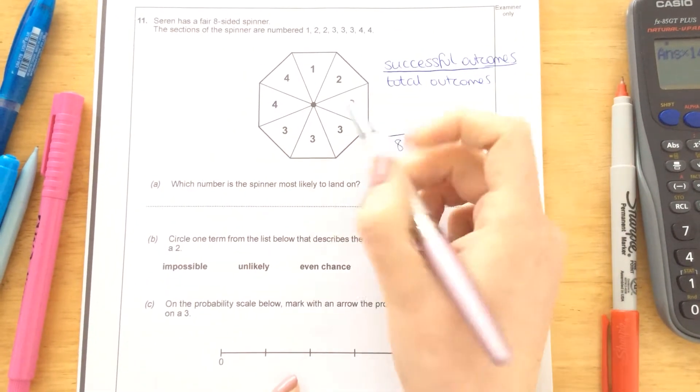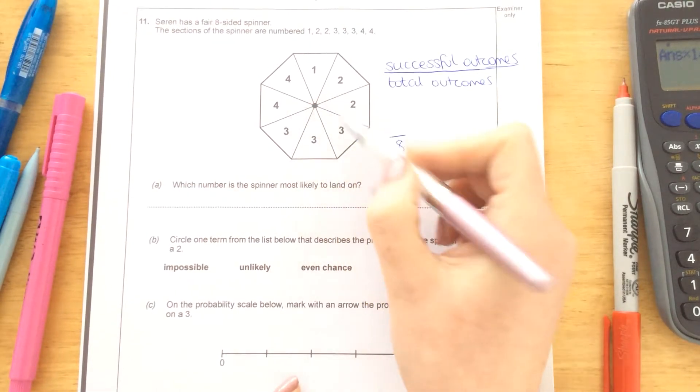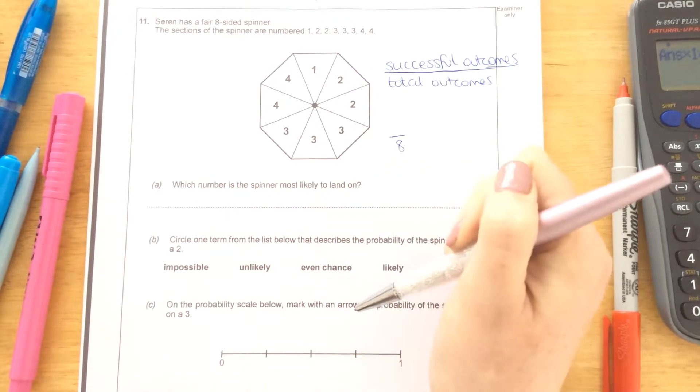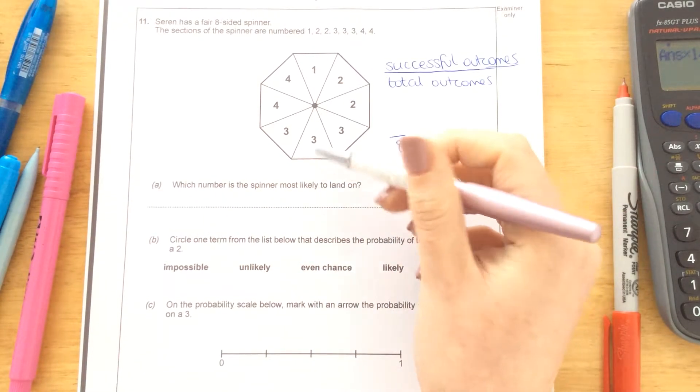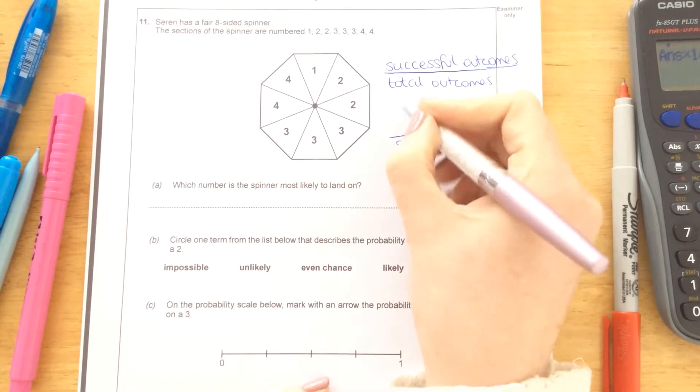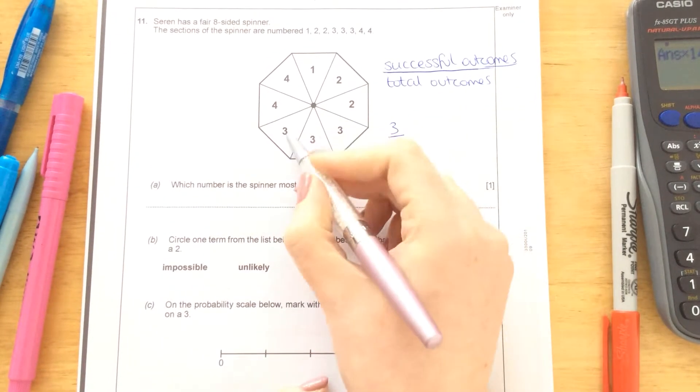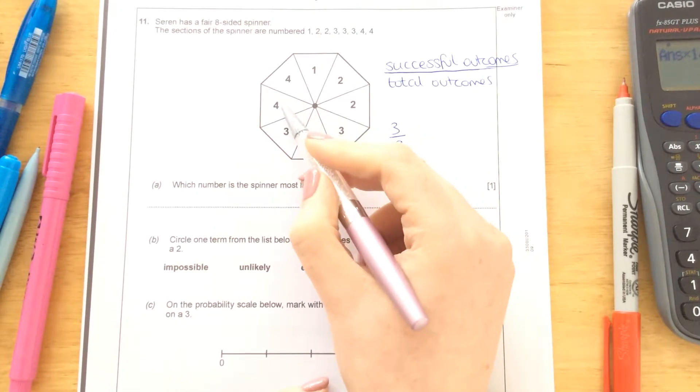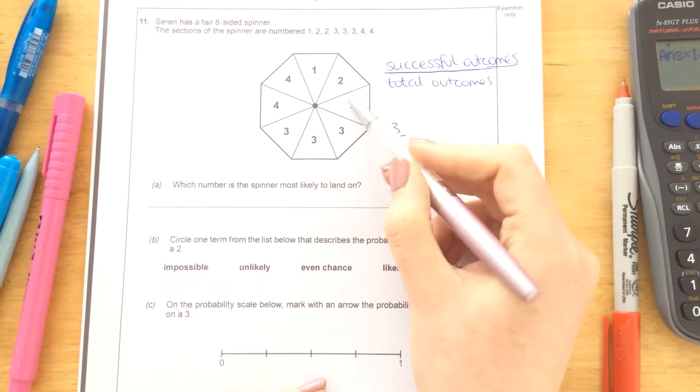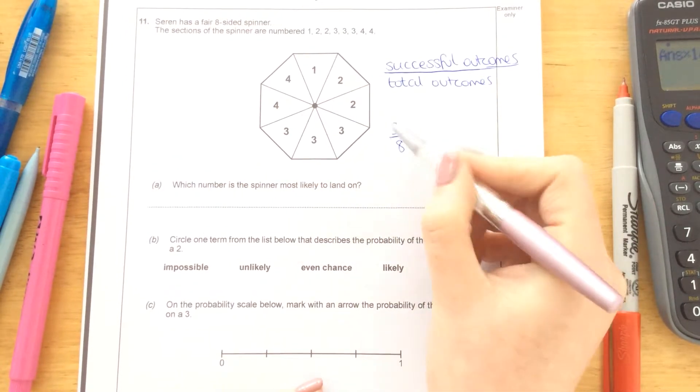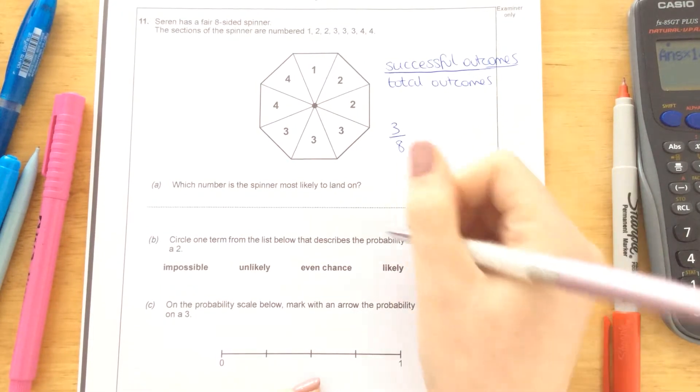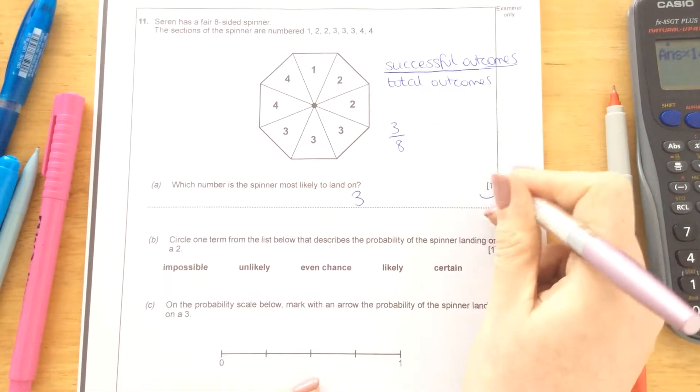Then each one would say how many of each number are there? So for example, which number is the spinner most likely to land on? Which number comes up the most often? There would be 3 threes out of 8, the fours would be 2 out of 8, the ones would be 1 out of 8, and the twos would be 2 out of 8. So the 3 is most likely to come up.